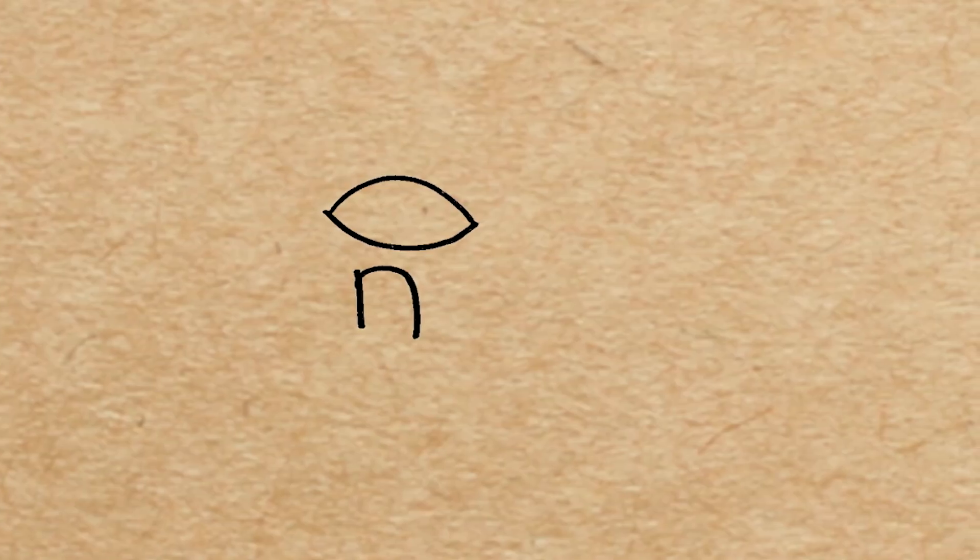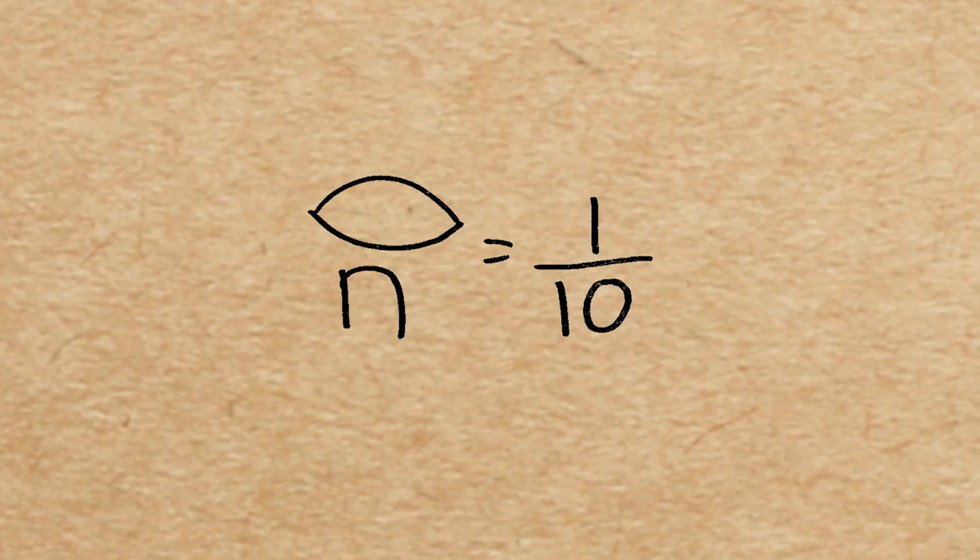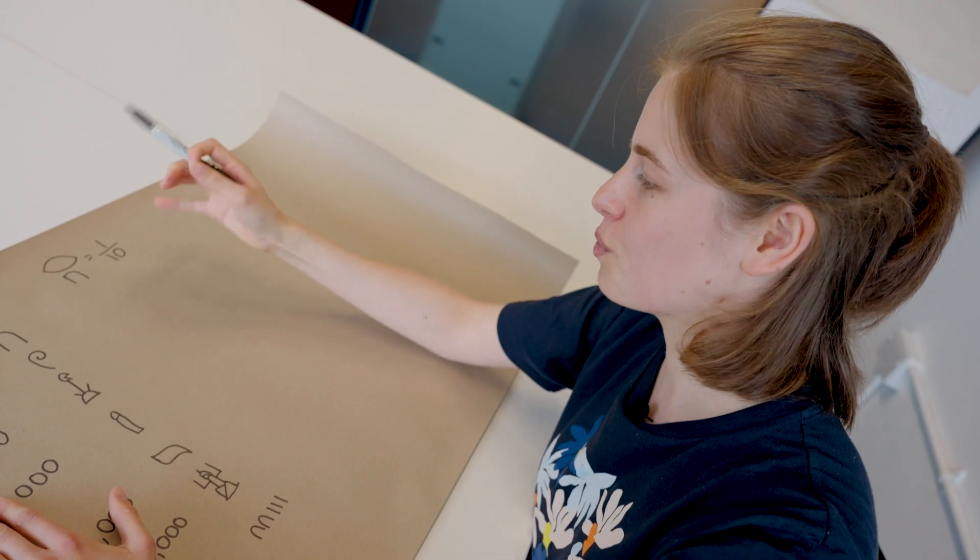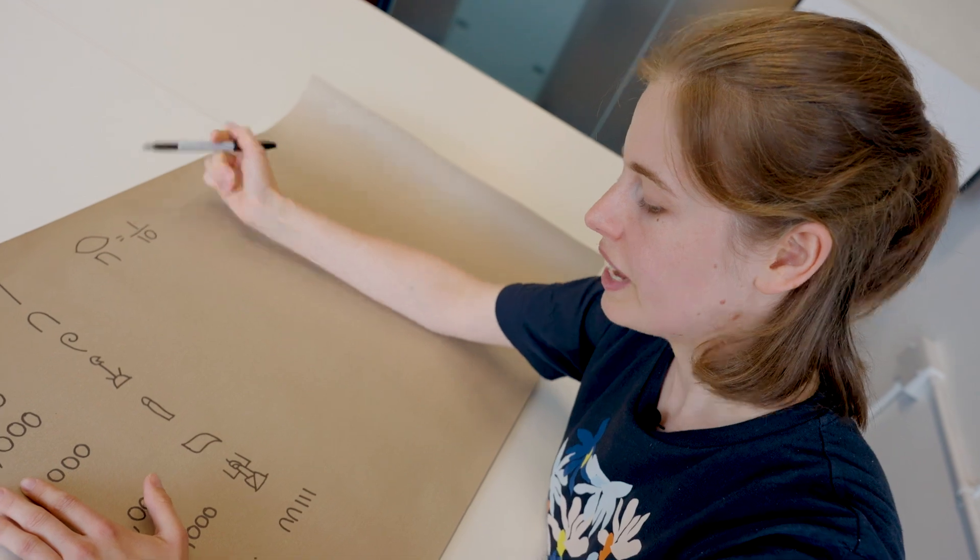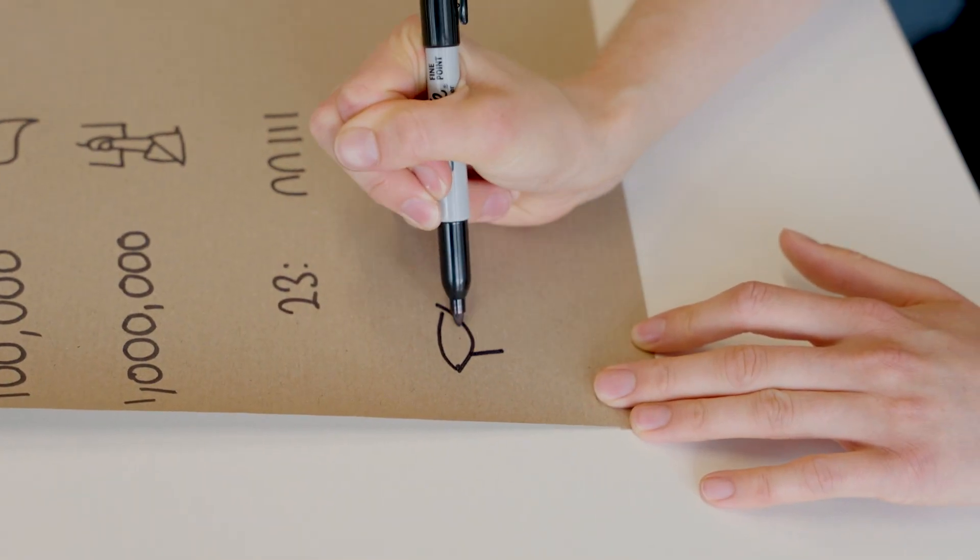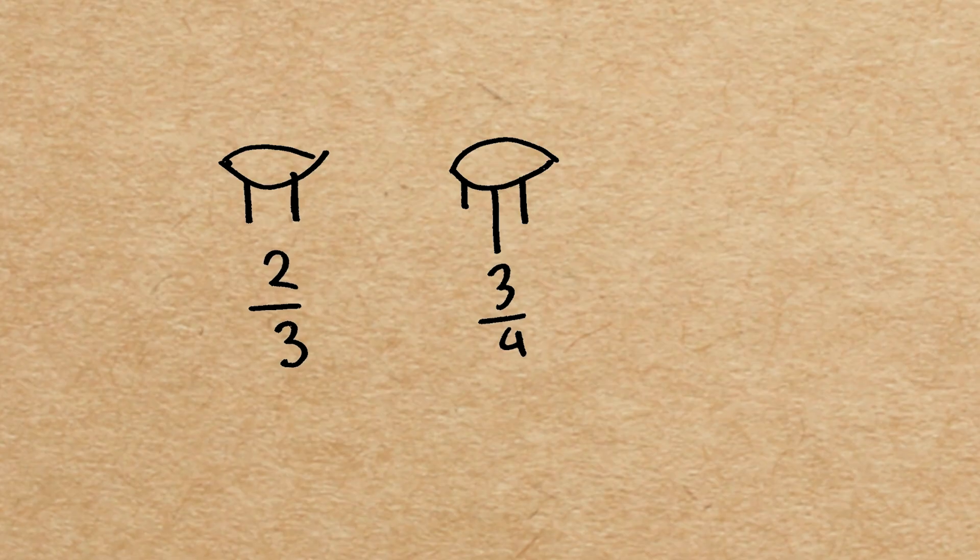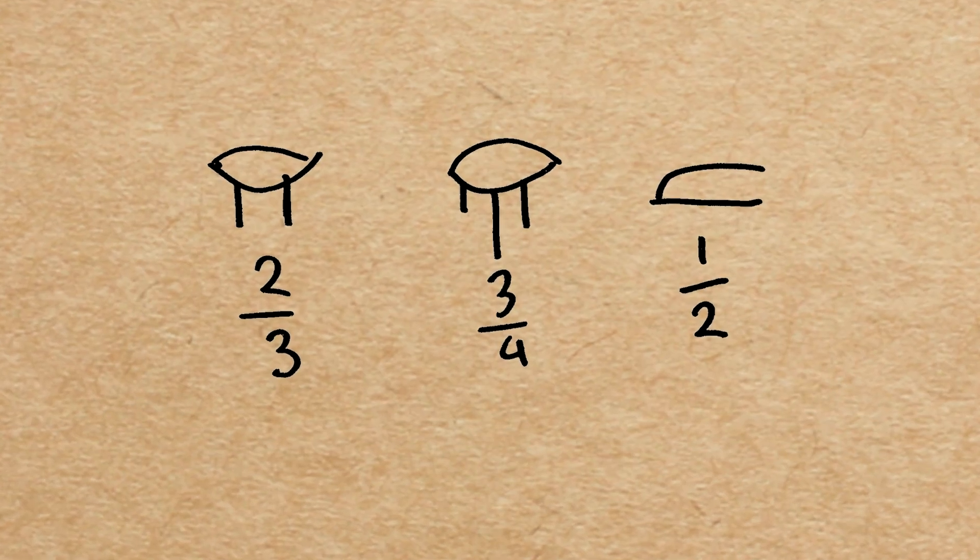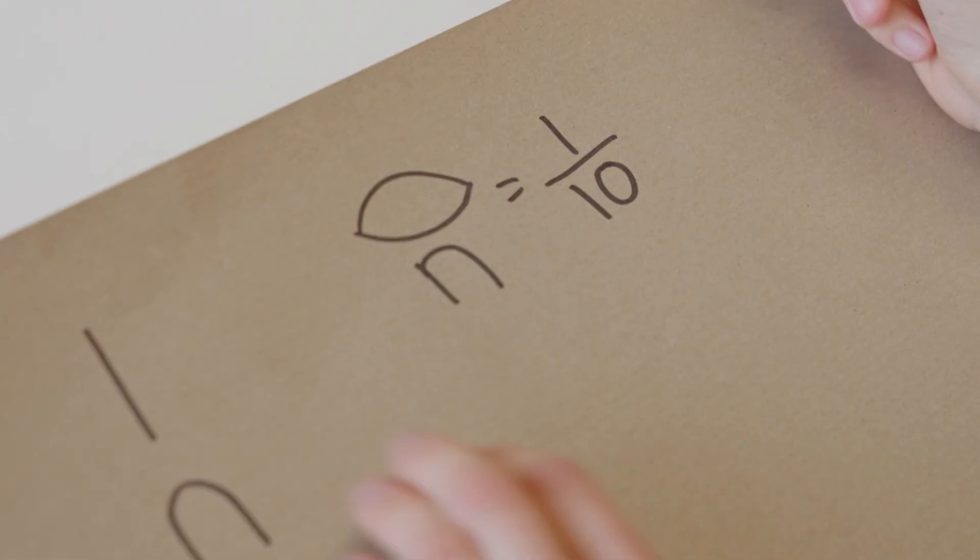So you might say this. And what this would be is a tenth because it's the mouth symbol over ten. Now with this we can only get fractions with one in a numerator. In fact, there are only two exceptions to this. So we can have two thirds, which is like this. And then there is also three quarters. And a half for some reason is different. But aside from that, all others are of the form one over n.